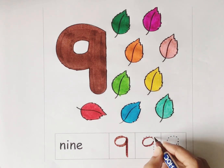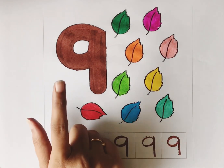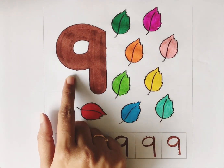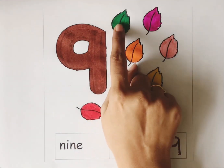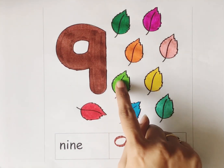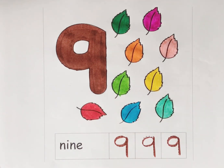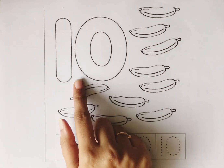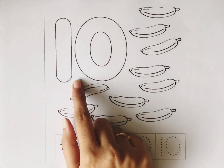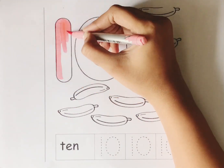Number 9. Let's count the leaves: 1, 2, 3, 4, 5, 6, 7, 8, 9. Nine leaves. Number 10. Let's color the number 10. Baby pink color.